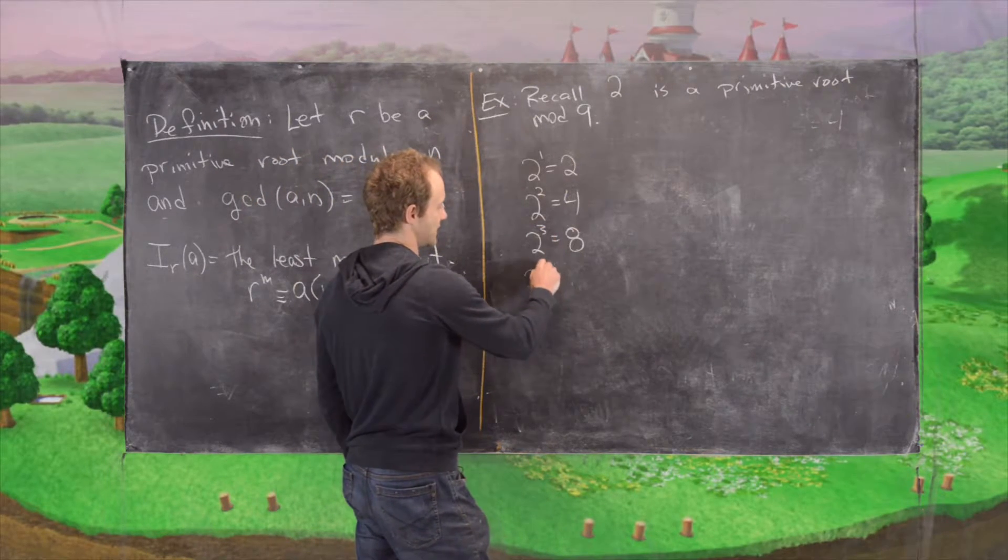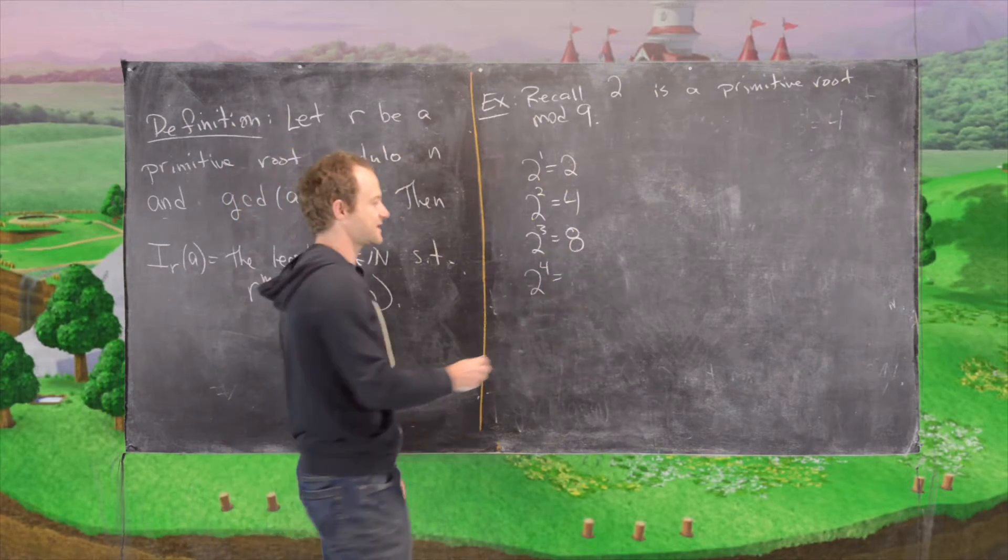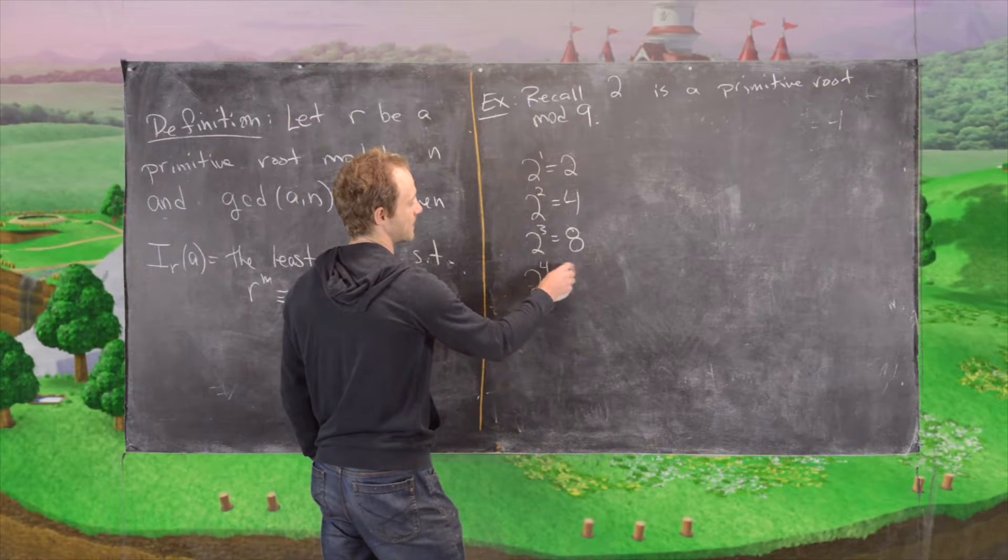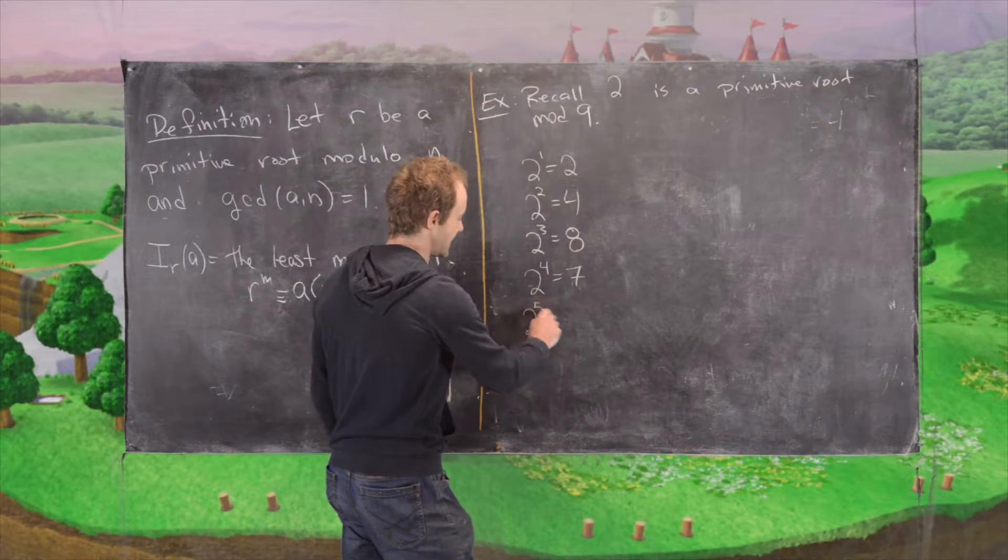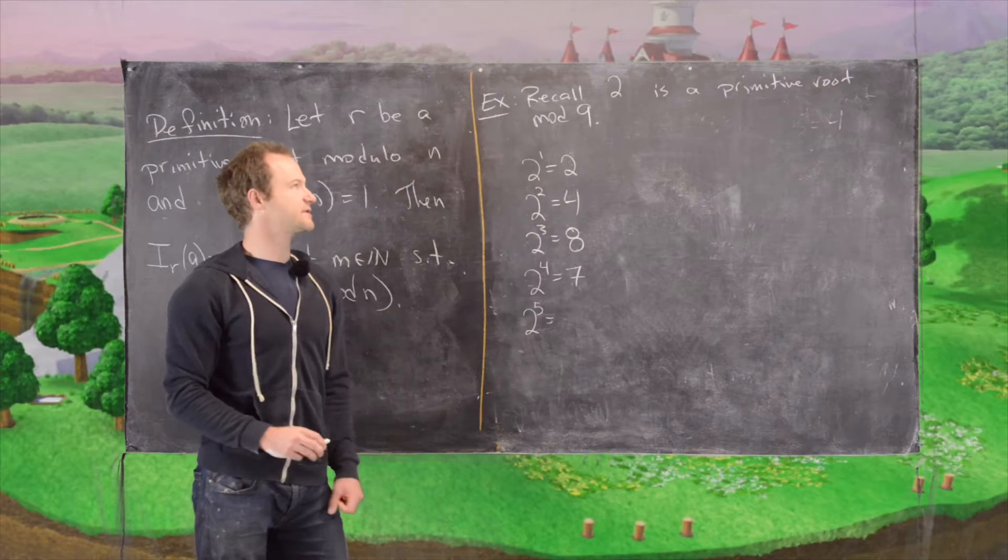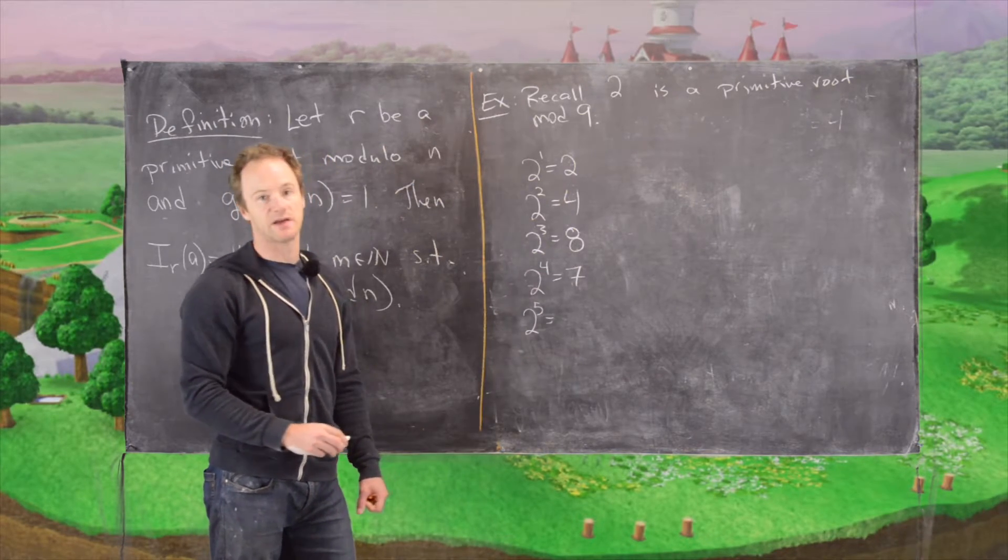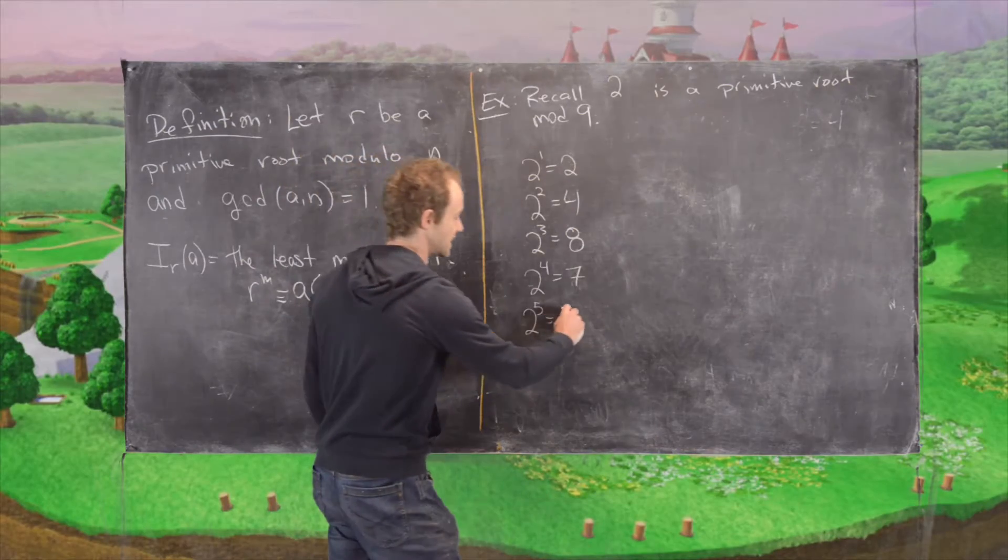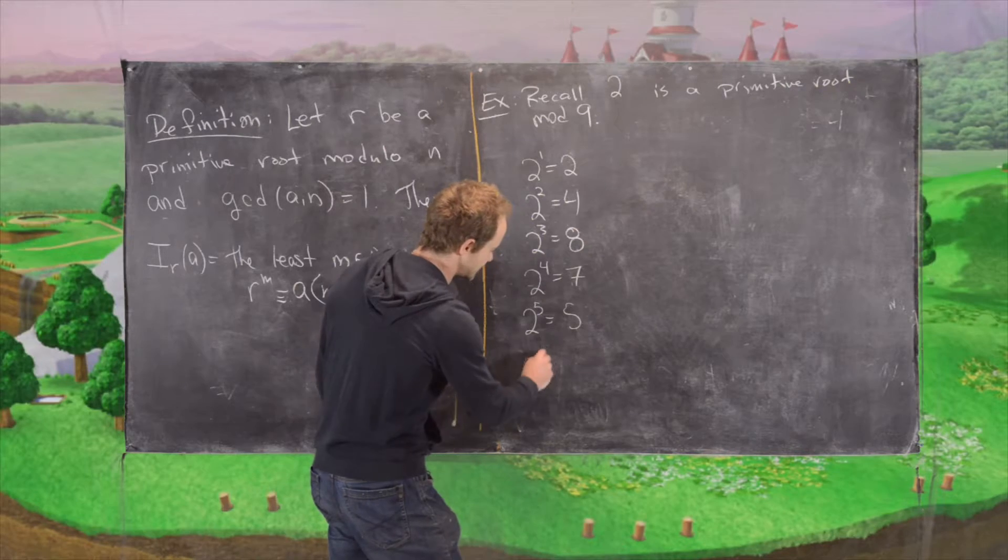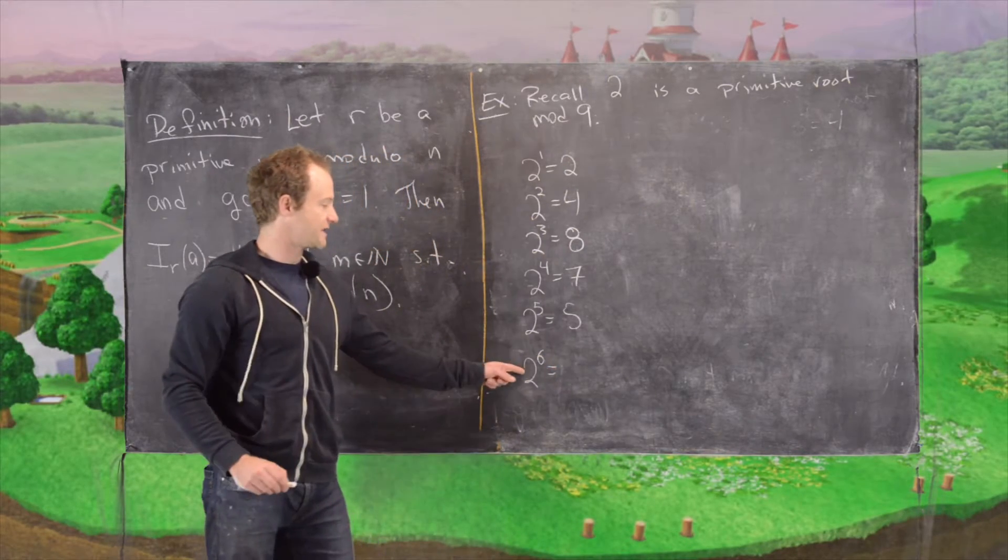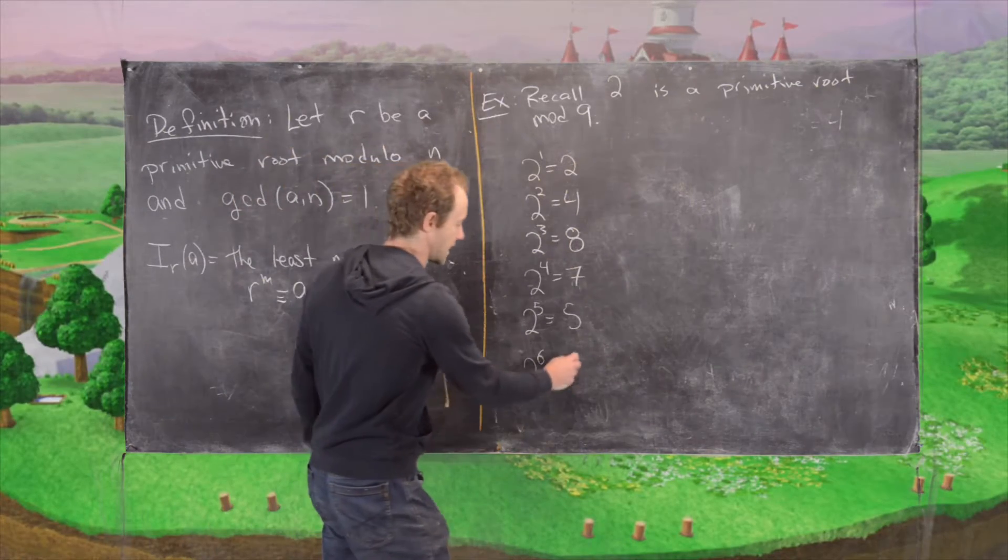2 to the 4th so that will be 16 which is 7 times 2 which is 14 which is 5 mod 9. And then finally 2 to the 6th so that will be 2 times 2 to the 5th. 2 times 5 is 10 which is 1 mod 9.